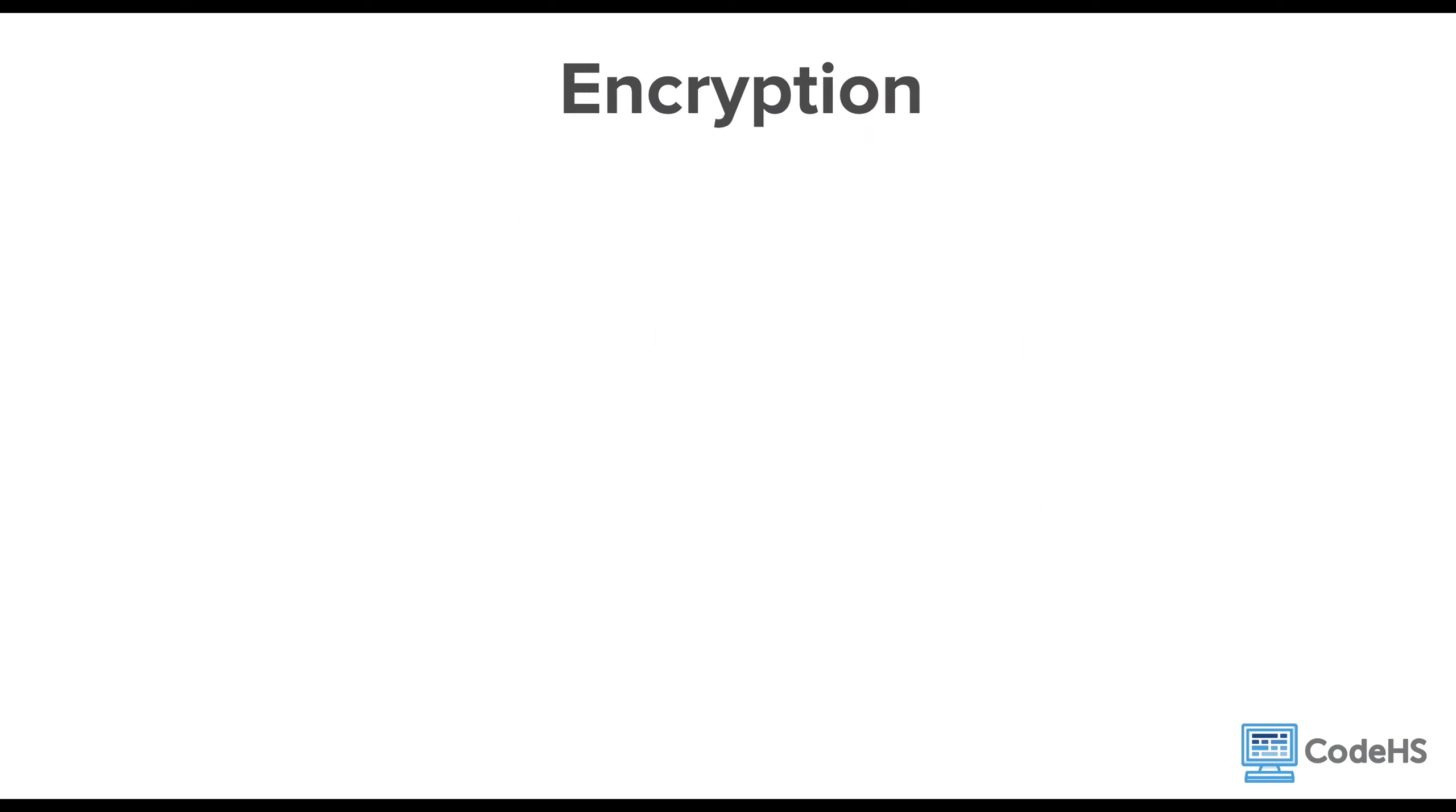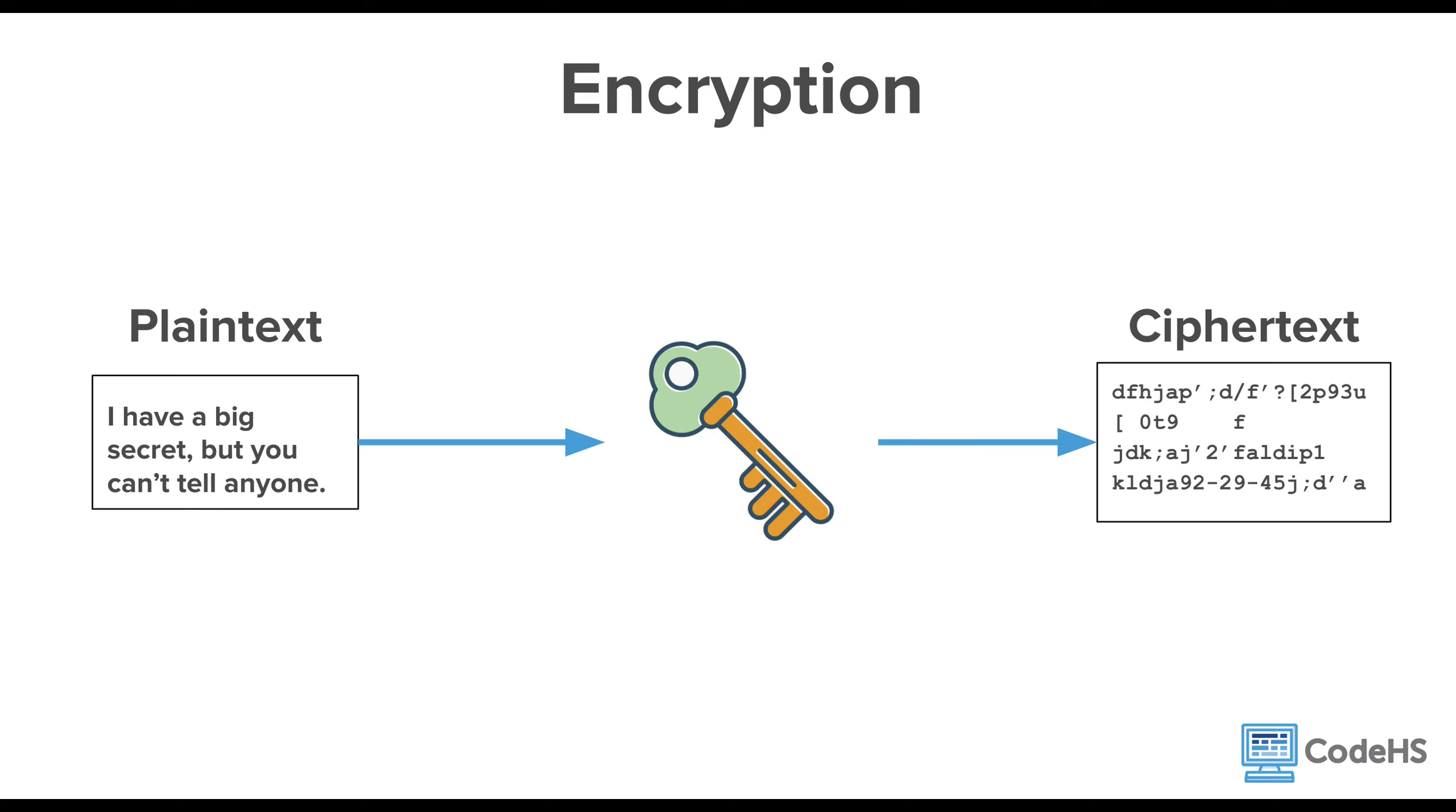Let's go over some of the words that are used when talking about encryption. You start with a readable message. This is called plain text. Anyone can read it easily. Then, you encrypt the message using a key. A key is a value or variable that is used during encryption. The message cannot be decrypted or unscrambled without knowing this key.